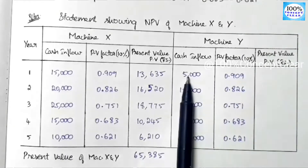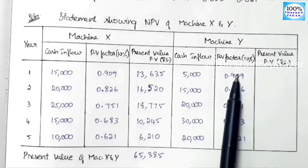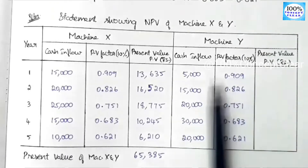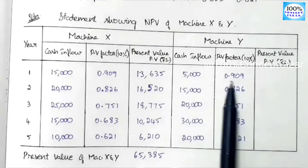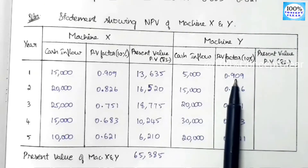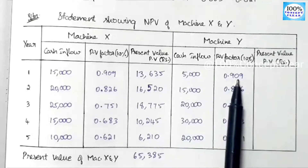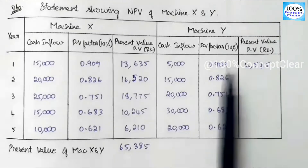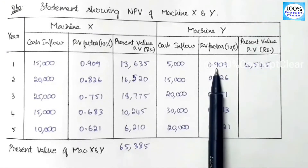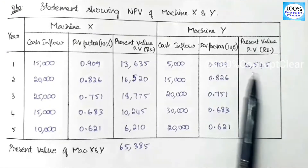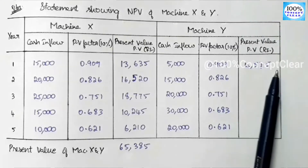For machine Y, we calculate present value as cash inflow multiplied by PV factor. In the first year, machine Y's cash inflow is 5,000, and the PV factor is 0.909, so 5,000 × 0.909 = 4,545.